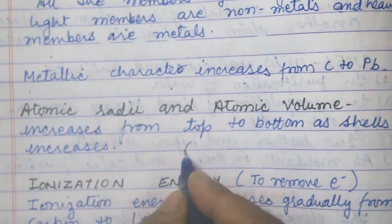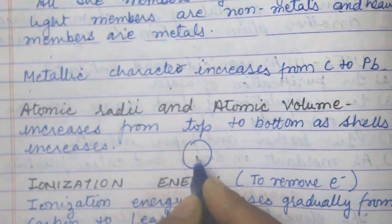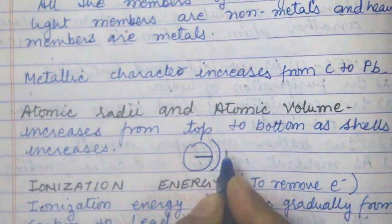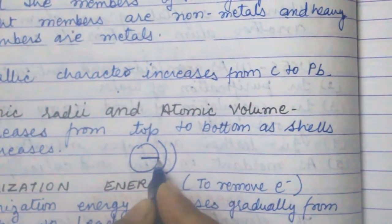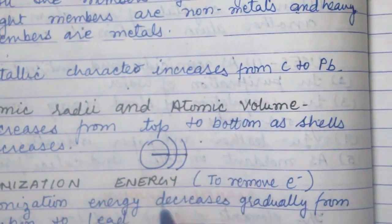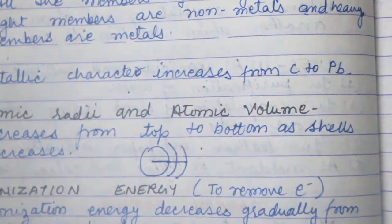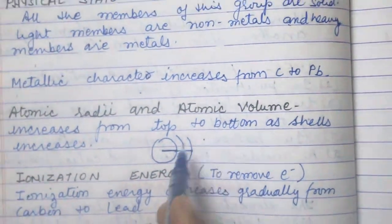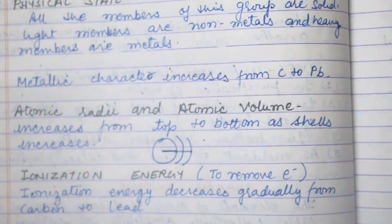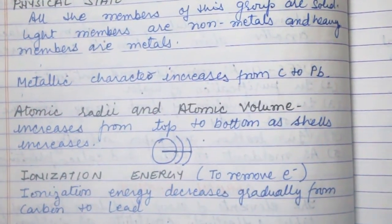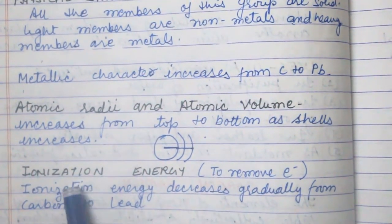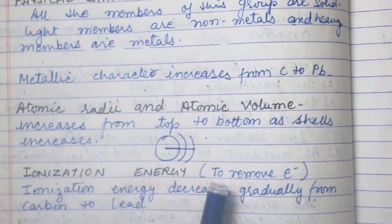As we go down the group, the radius increases because more orbitals are added. As the orbital size increases, the radius also increases, and the volume also increases. Volume is the space occupied by the orbital.